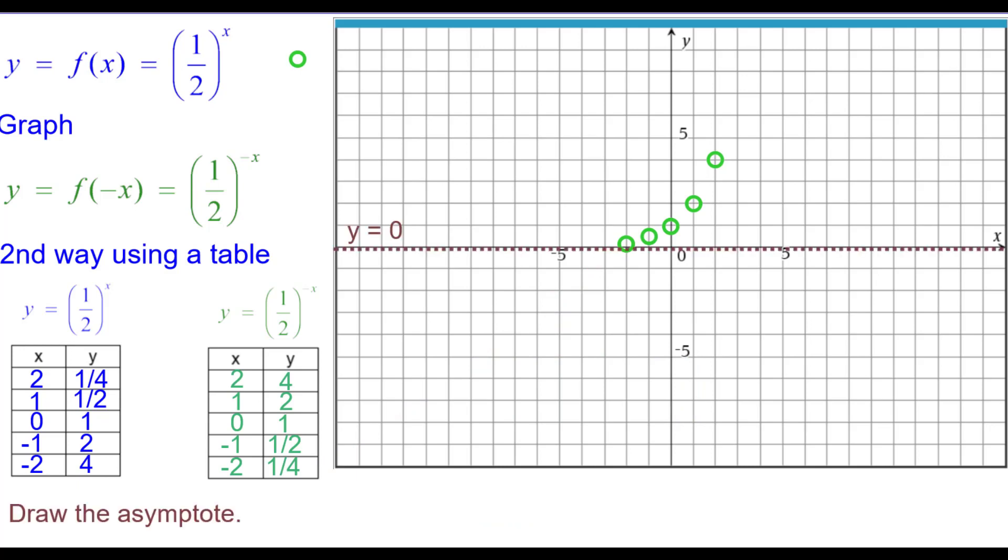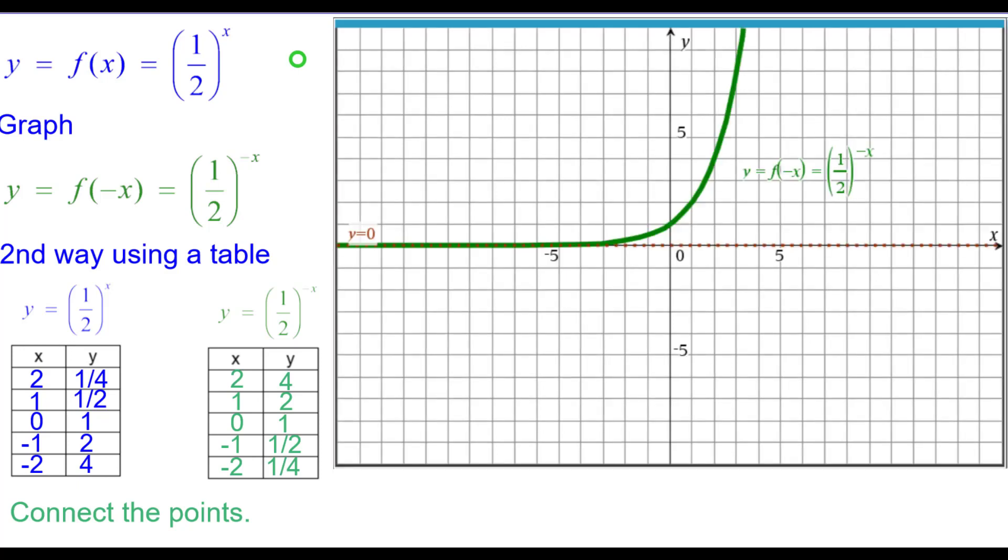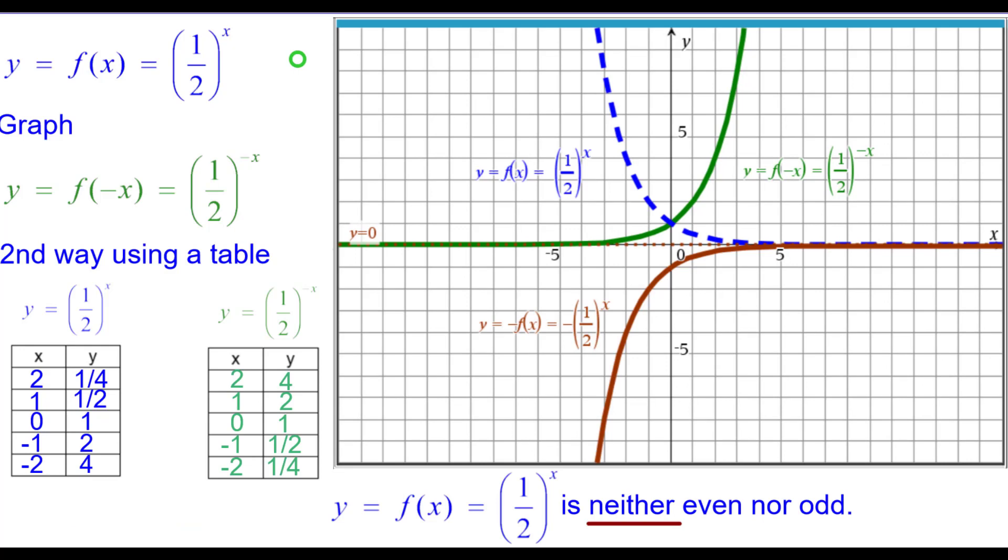We'll draw the asymptote, the x-axis, and connect the points. Comparing this to the parent function or to the opposite of 1 half to the x, none of them are equal. So it's neither even nor odd.